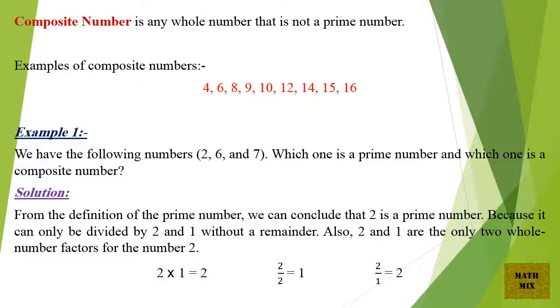Example 1: We have the following numbers — 2, 6, and 7. Which one is a prime number and which one is a composite number?